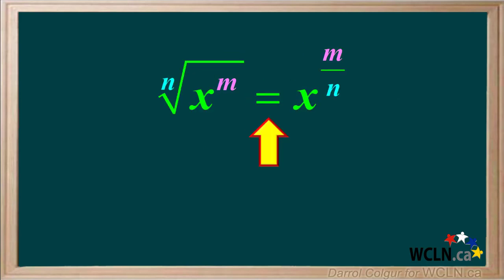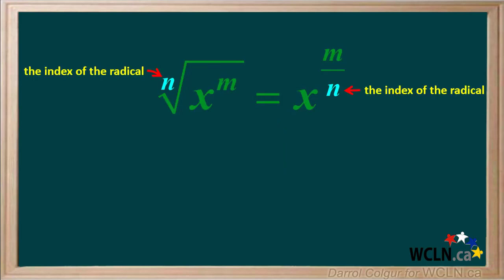Here's a general equation we can use for converting back and forth from radical to exponential forms. n represents the index of the radical — you can see it's the denominator of the exponent in the exponential form. And m represents the exponent of x — you can see it's the numerator of the exponent in the exponential form.